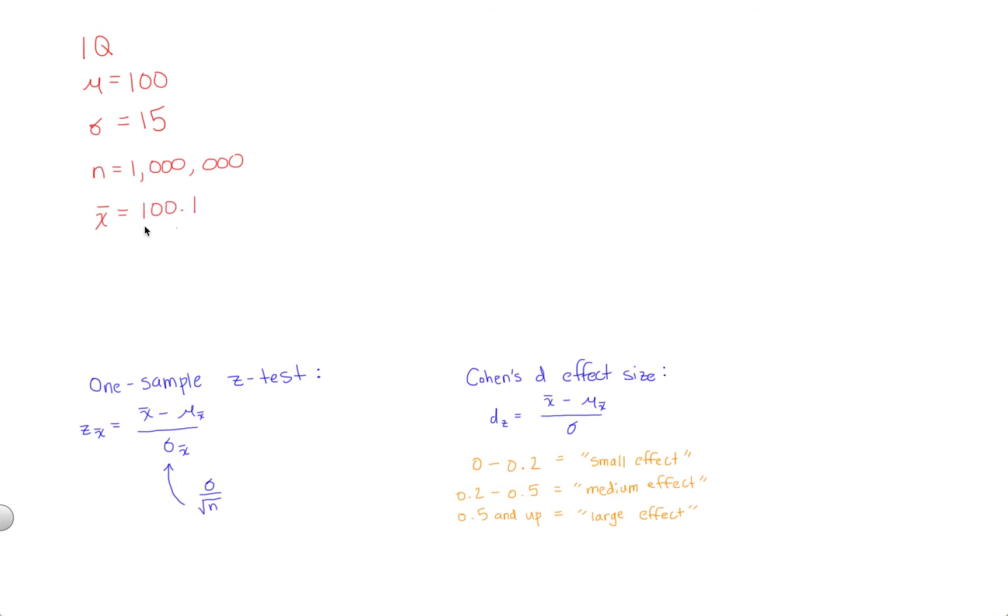So in this case, you're probably not too impressed. An average IQ of 100.1 is not much different than the population average of people who don't take neuro IQ, which is just 100. It's basically the same thing. But here's the thing.